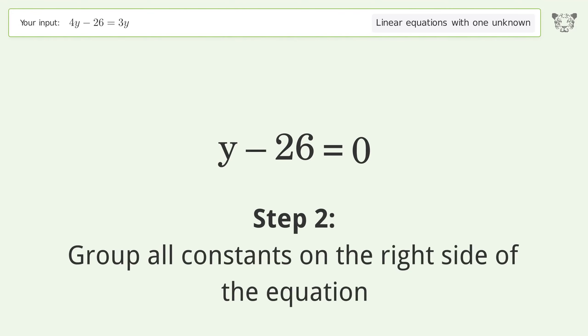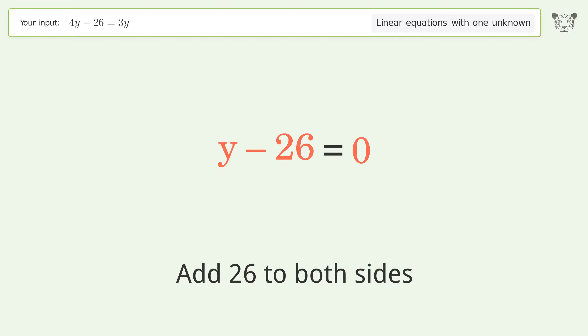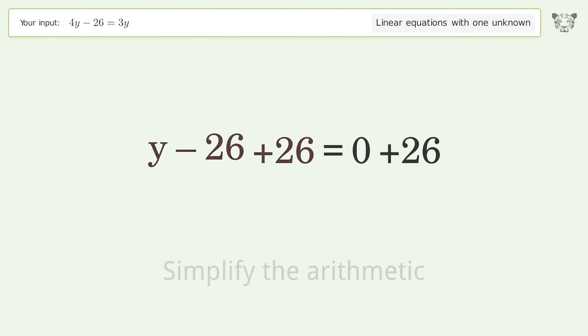Group all constants on the right side of the equation. Add 26 to both sides. Simplify the arithmetic. And so the final result is y equals 26.